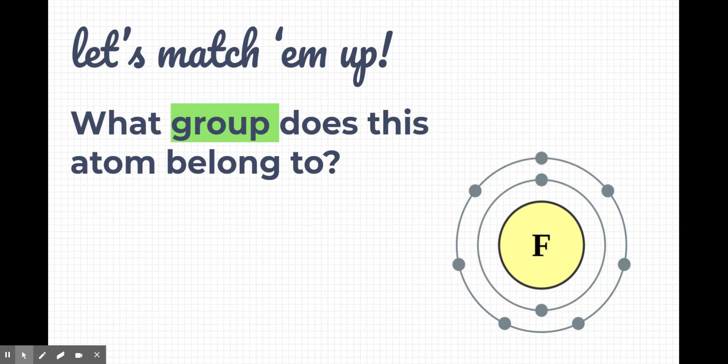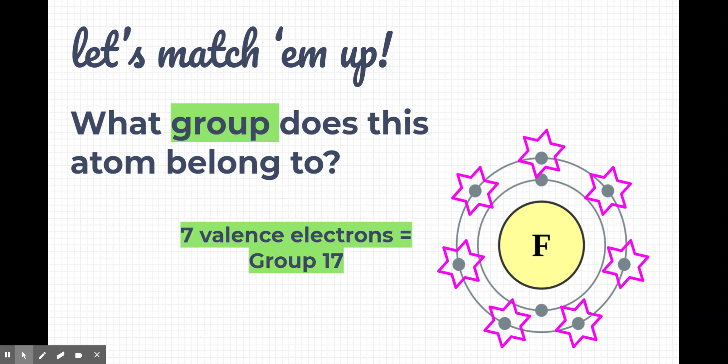Now what you can do is you can kind of go back and forth, and you can use an atom to identify what element it is on the periodic table, just by looking at the valence electrons. So let's practice. What group does this atom belong to? This atom belongs to group 17 because it has seven valence electrons.